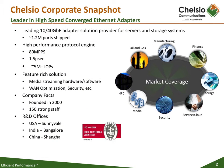Chelsio Communications is a producer of high-performance multifunction Ethernet adapters. These adapters, based on the 5th generation silicon T5, support 10 gigabit and 40 gigabit connections. Chelsio has been in business since 2000 with headquarters in Sunnyvale, California.